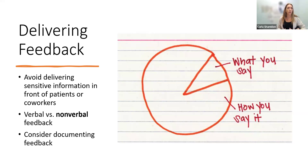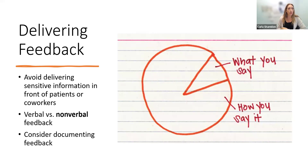A lot of delivering feedback is how you say things — your body language, your tone, your eye contact, and whether the student feels like you're rushing to give them feedback and move on to the next patient. Avoid delivering sensitive feedback in front of patients or coworkers; it's really best to pull them aside or take them into a private area for more constructive feedback. Consider verbal versus nonverbal cues you may be giving — if you're standing with arms crossed and seem disappointed, that's going to come across to them. And consider documenting the feedback.